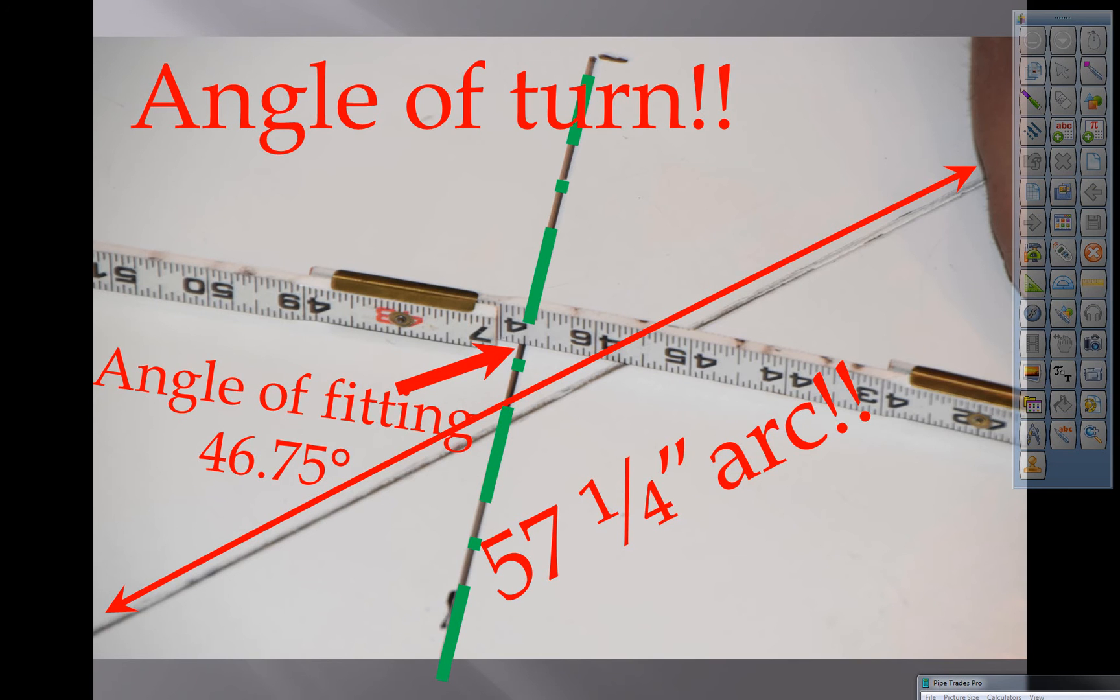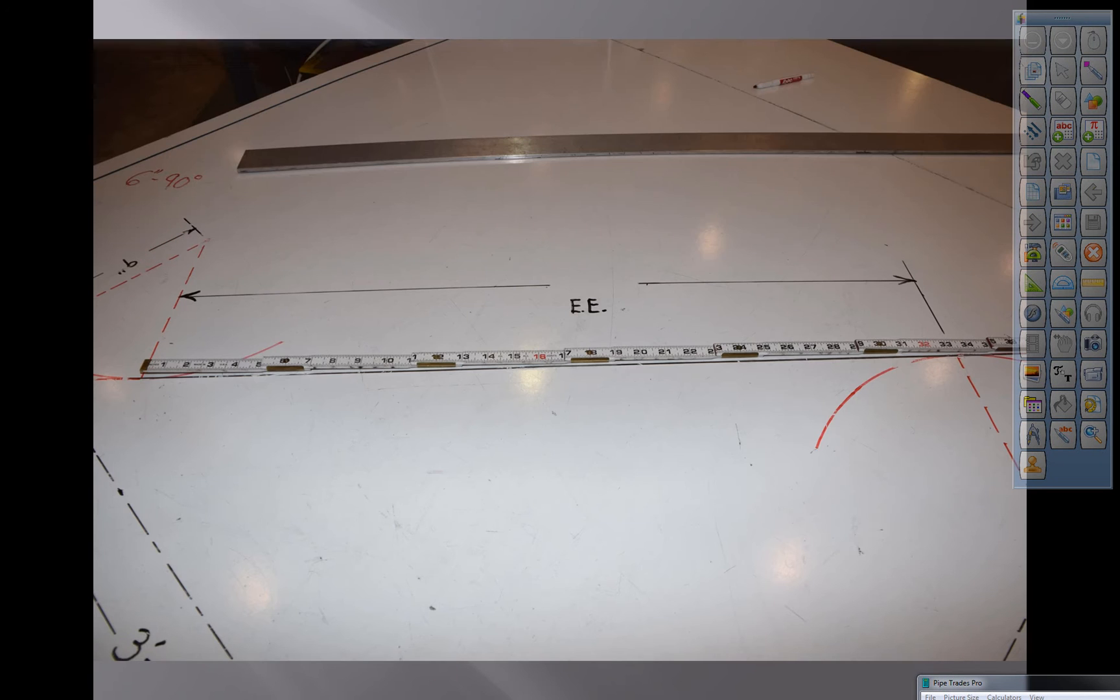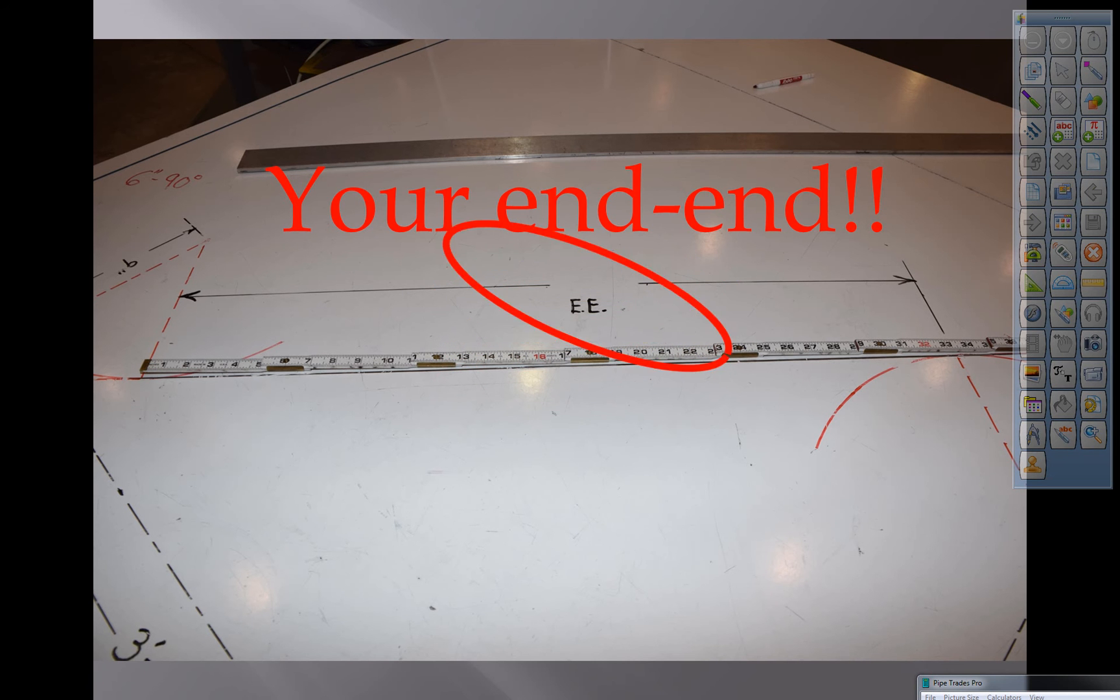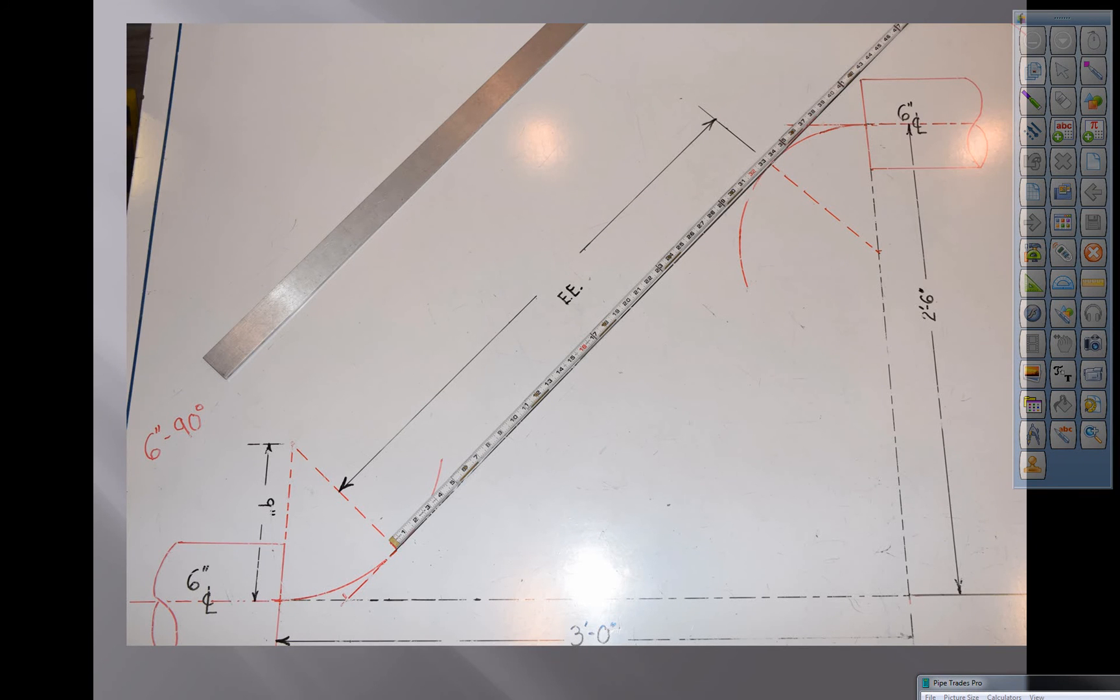There's your end to end. It's right there in front of you. It's going to be right on the table. There's a better view. No math. So far we've come up with the fitting takeoff, the angle turned, and now all we have to do is measure the end to end off the table.